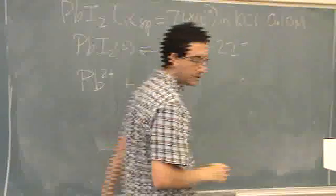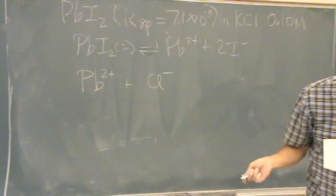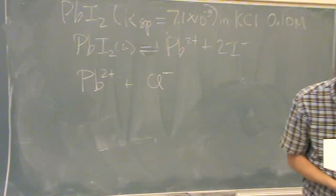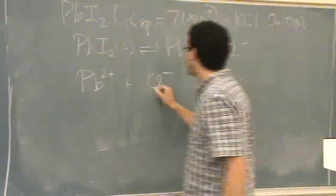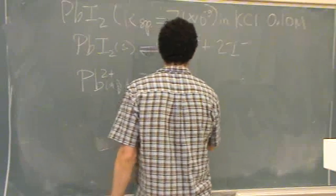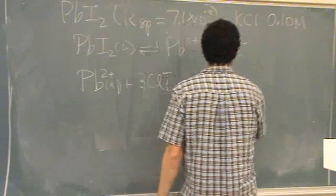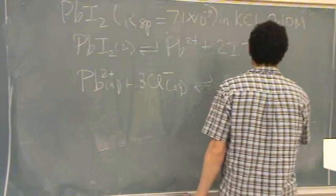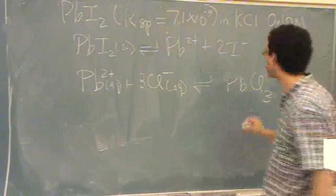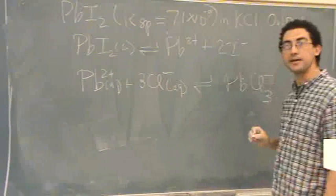So lead, once you add in chlorine, and the following reaction I'm just getting out of the KF table on page 762, Petrucci, will react with 3 chlorines, these are both aqueous, to form PbCl3 minus.